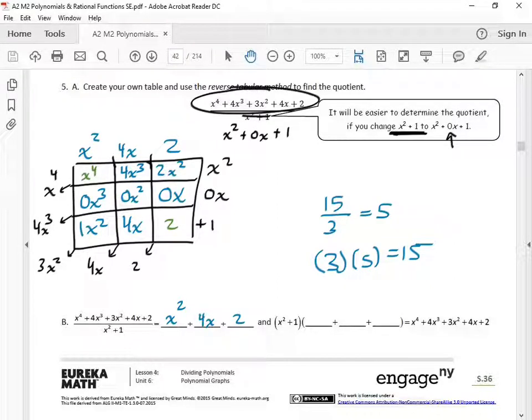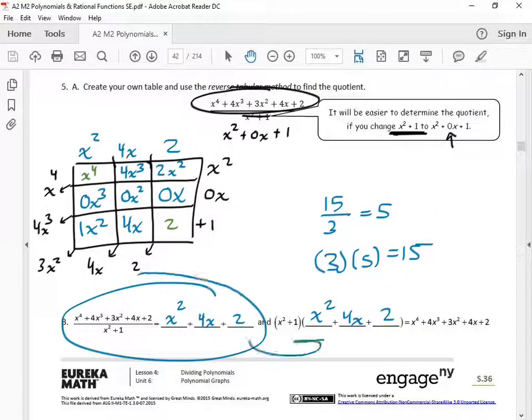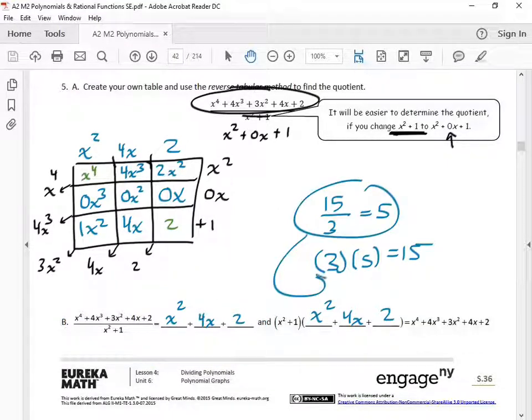So here we would put x squared, 4x, plus 2. But don't miss the point here. Yeah, you're just copying this. It's over there. But don't miss the point here. If you go this polynomial divided by the bottom polynomial, you get this. Just like, you know, 15 divided by 3, you get 5. You can rewrite this into a multiplication problem, just like we can rewrite this into a multiplication problem. All right. That's how you do reverse tabular method, or dividing using reverse tabular method.